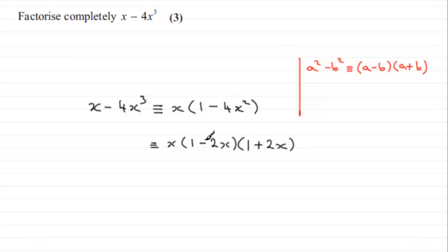So we've now got three factors: the x, the 1 minus 2x, and the 1 plus 2x. Do any of these factors factorise any further? Well, no. So that is it, fully factorised.